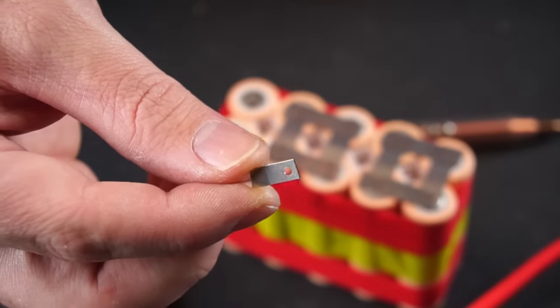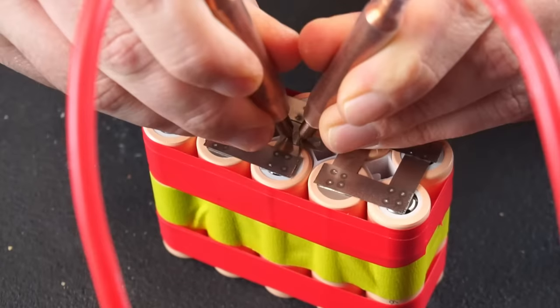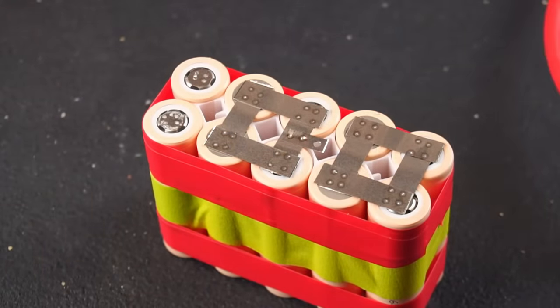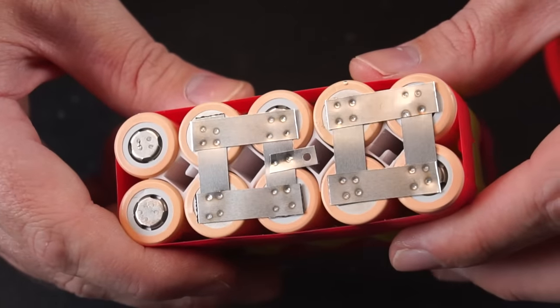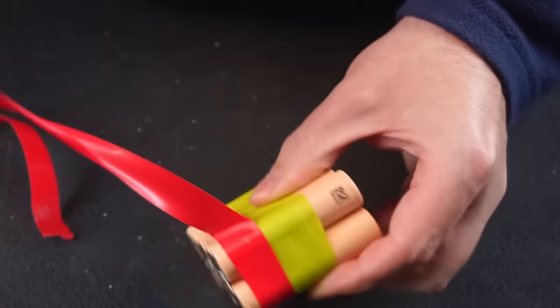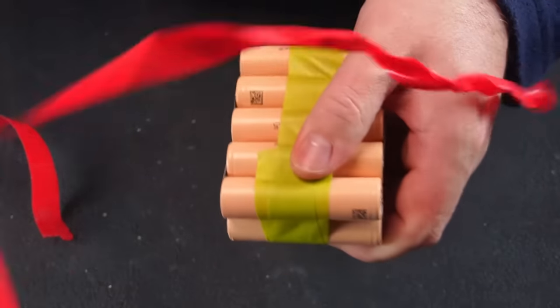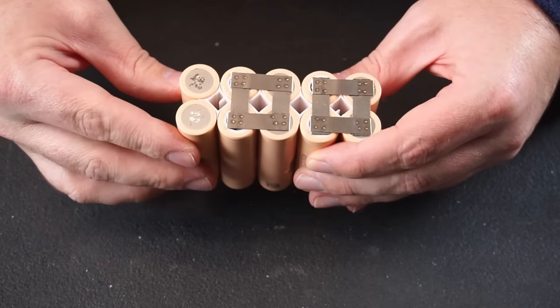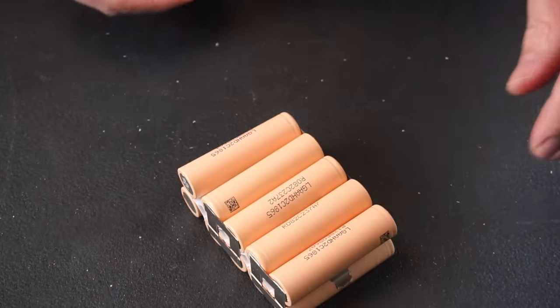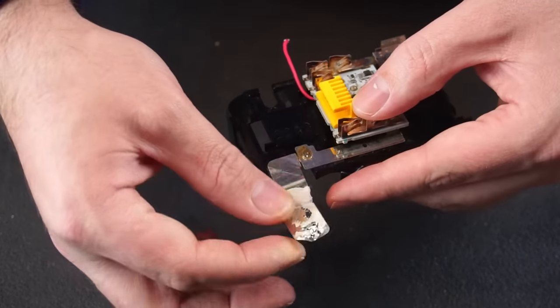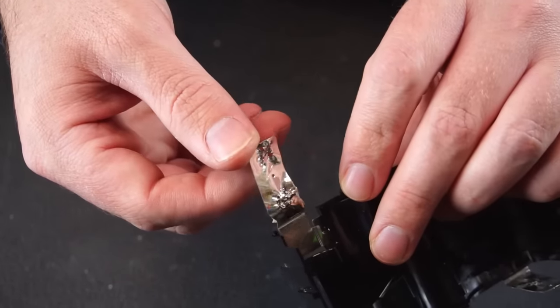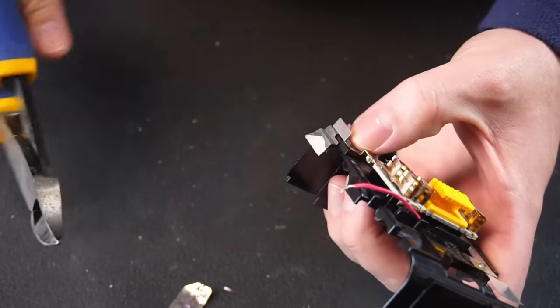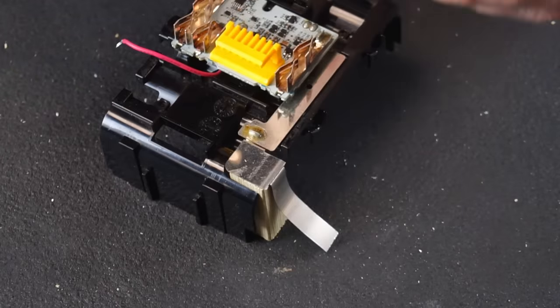I cut a small piece of strip to solder the BMS sense wire to later. Now the strips on the BMS are too mangled to reuse, so I cut them off and spot welded a replacement strip on.